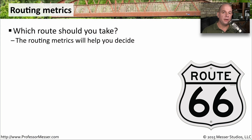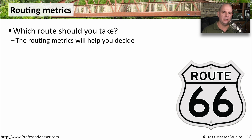So far, we've looked at routing tables and the method that our routers use to determine what the next best hop is going to be. One of the things that you've seen in a routing table is something called a routing metric. This can be very useful if a router is trying to make a decision on how to get to a location and it has a number of options. If there are three different routes to a location, it needs to make a determination on which one is really going to be the best route, and routing metrics is a very good way to do that.